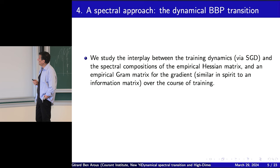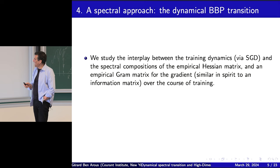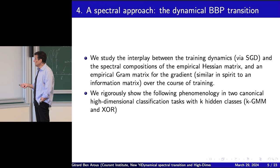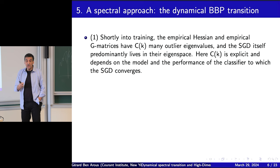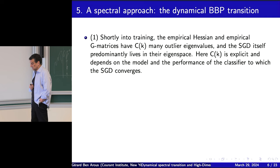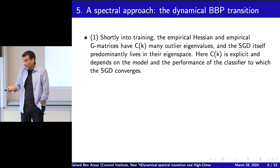What we do is look at this interplay between the training dynamics via SGD — specifically online SGD — and the spectral decomposition of the empirical Hessian matrix and empirical Gram matrix over the course of training. Shortly into training in the classification model, the empirical Hessian and the empirical Gram matrix have outliers: C of K in the K-class classification.